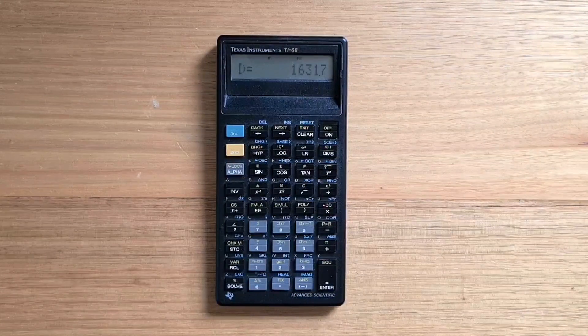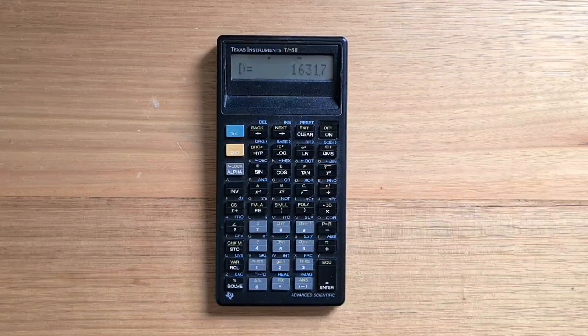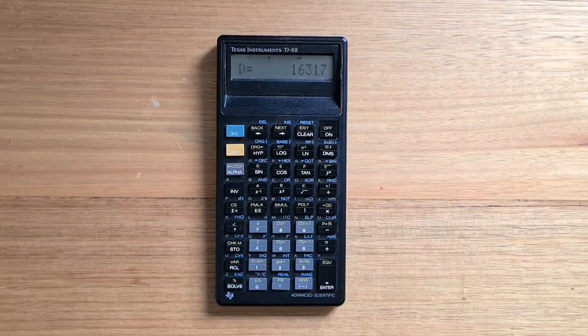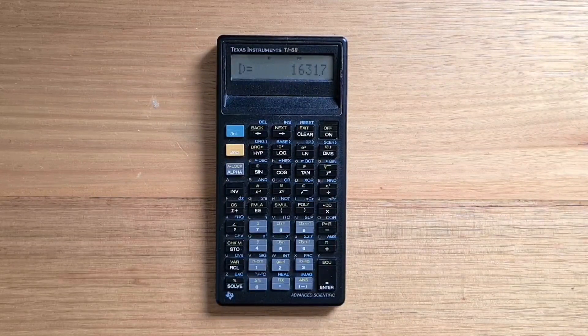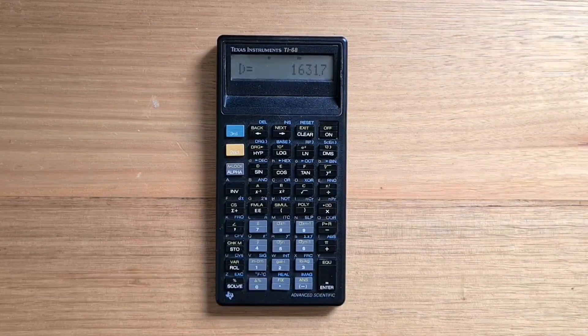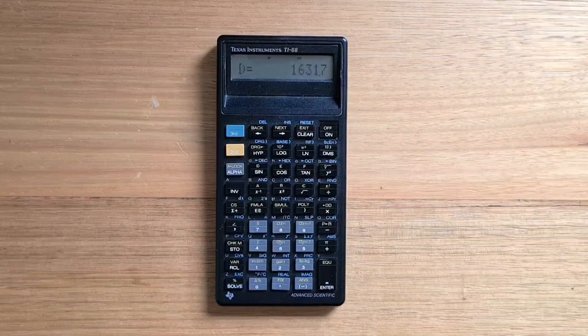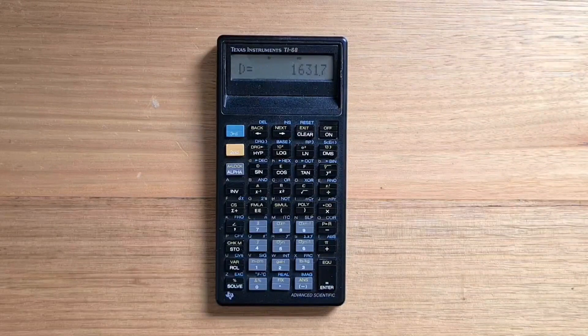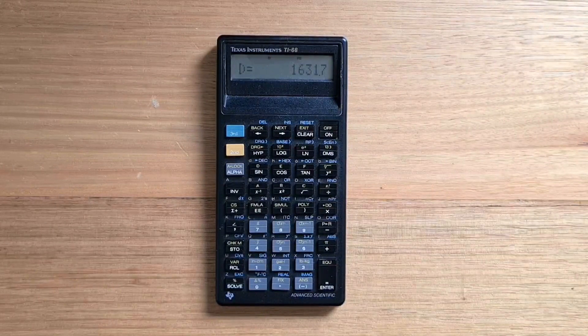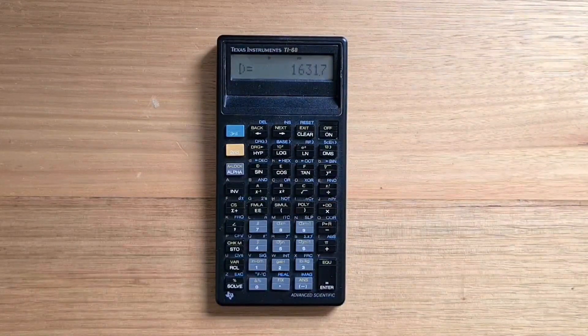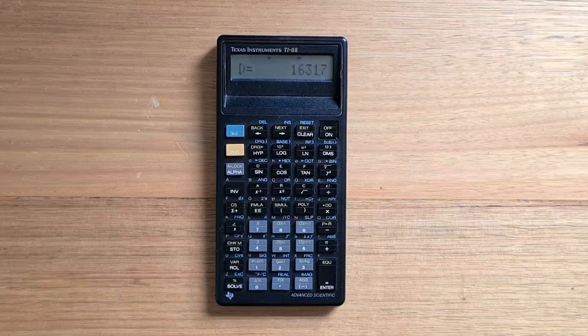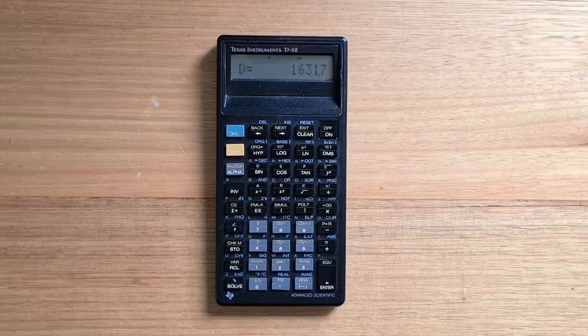Interestingly, after the TI-68, TI released a simplified version in the TI-60X, no doubt aimed at the student market. And in 1992, TI also went on to produce the excellent TI-Galaxy 67, a similar landscape formula calculator that supported both formula and keystroke programming.